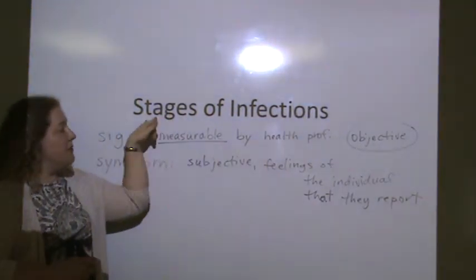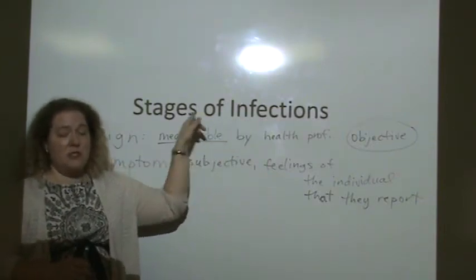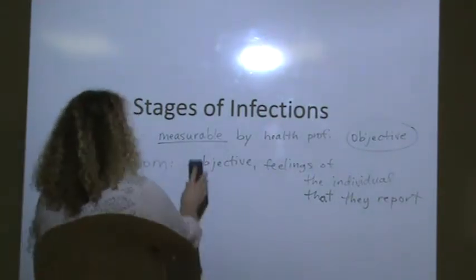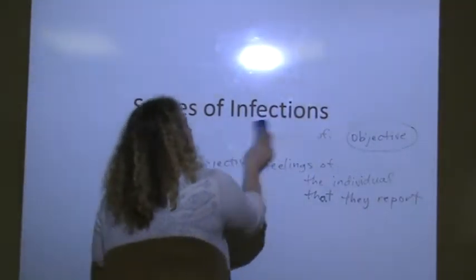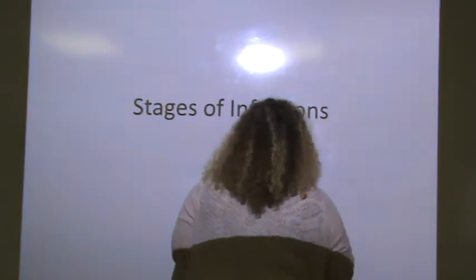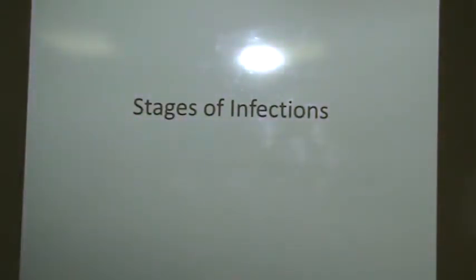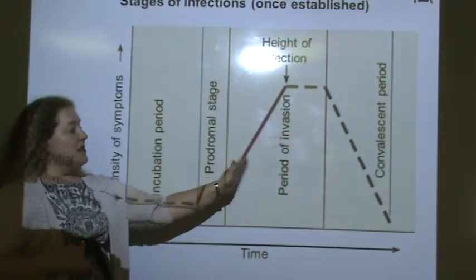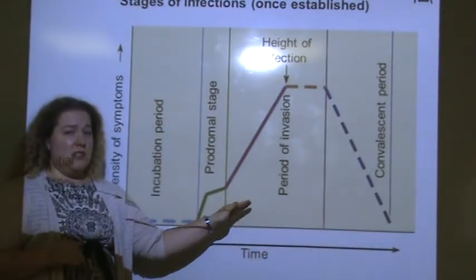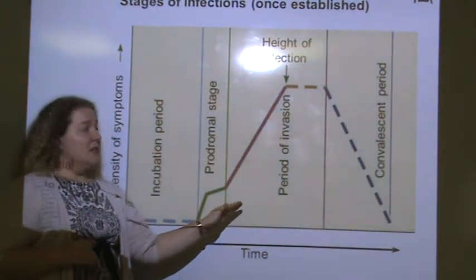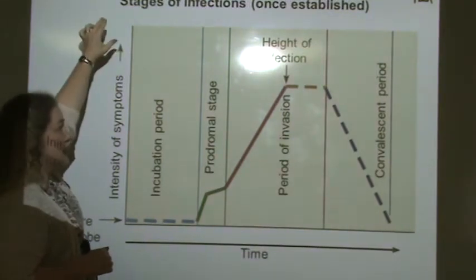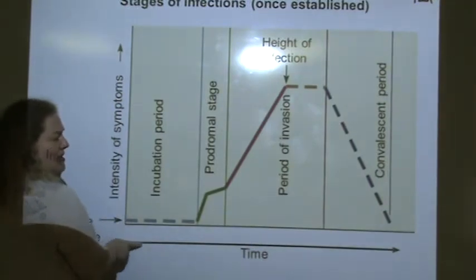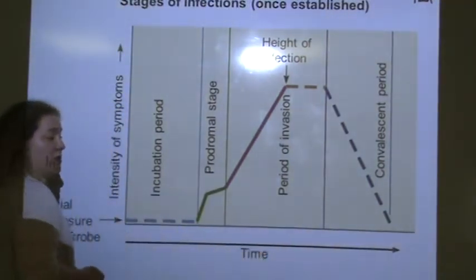This next chart of measuring stages of infections, once they're going, it depends on the intensity of signs and symptoms. So we need to define those first. This next slide is a graph. And this particular graph is something that you will need to study and memorize the names of the stages and generally what is going on during that time. So this is stages of infections once they're established. And we're looking at time on the x-axis as we so often do.